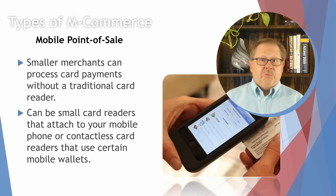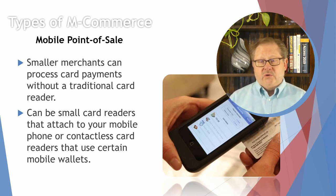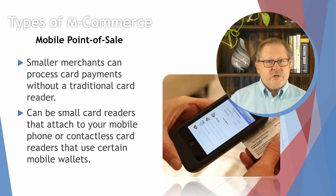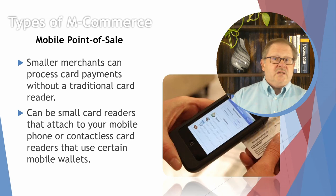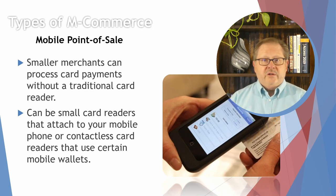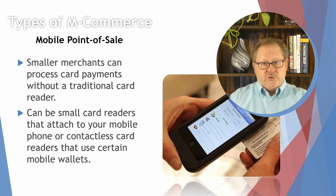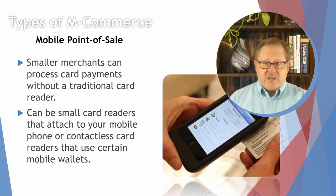Another area of mobile commerce is that you can actually use your cell phone as a card reader. Square has great credit card readers — small companies that can't afford large infrastructure can easily pick up a Square reader for their phones. I've seen it especially prevalent at farmers markets, where small businesses set up for the weekend with their goods, fruits, and vegetables. All they need is Wi-Fi to accept credit cards or cash right in their setup area.